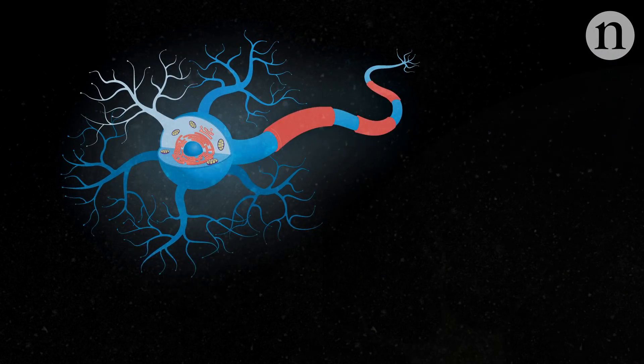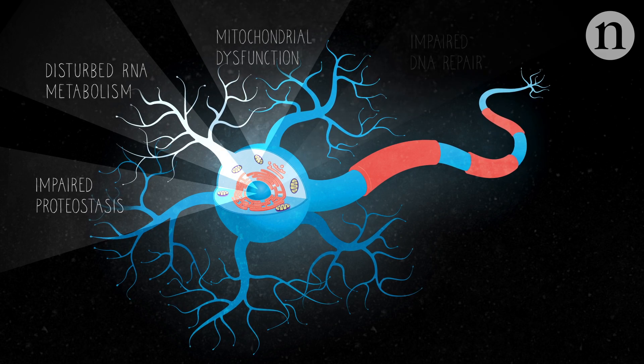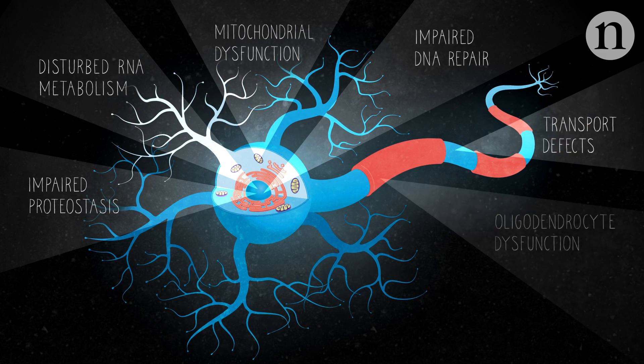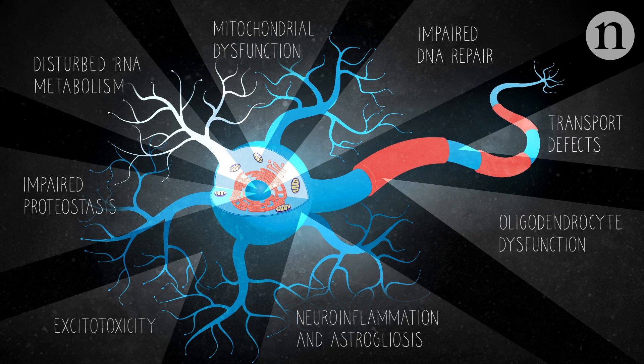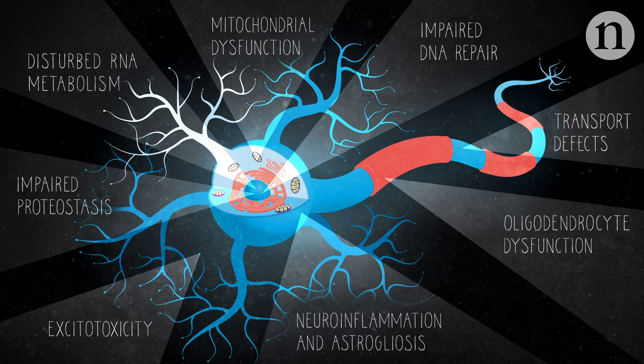Further research is needed to find out which of these many processes cause the motor neuron degeneration seen in ALS patients. Targeting new drug therapies at those processes might lead to a treatment for this incurable disease.